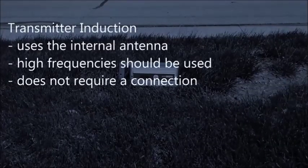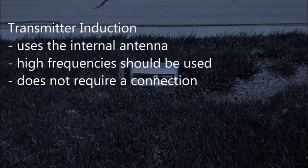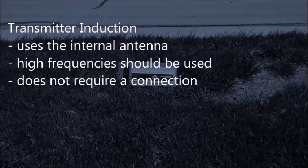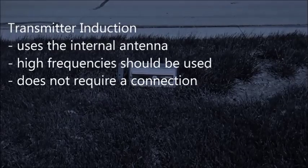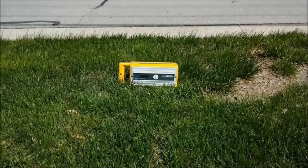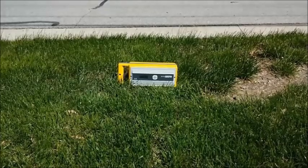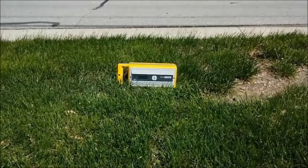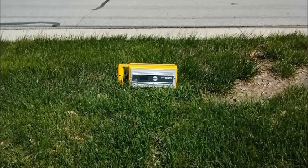Transmitter induction uses an internal antenna to broadcast the locate signal to a buried utility. High frequencies should be used for successful transmitter induction. To induce with the transmitter, place the unit on its side with the long axis in line with the buried utility. Turn the unit on the highest frequency.